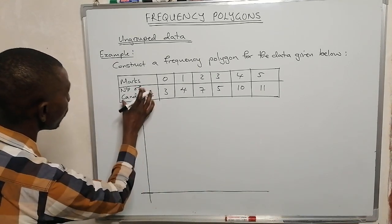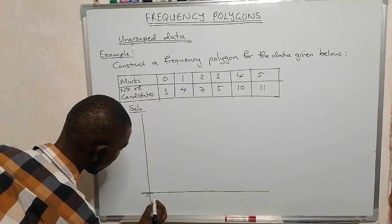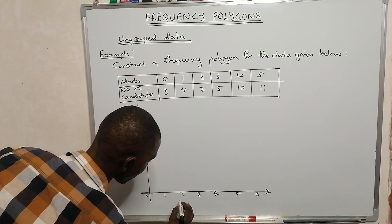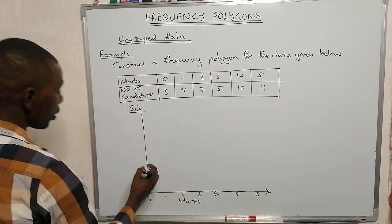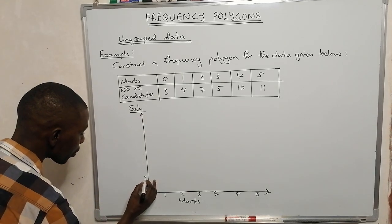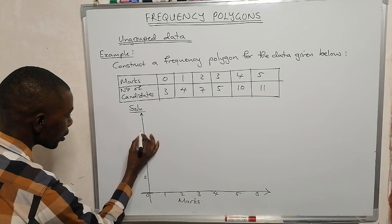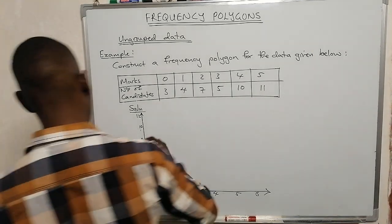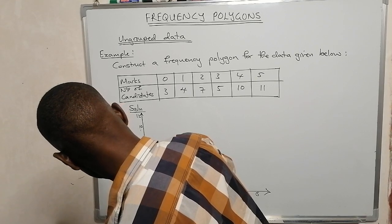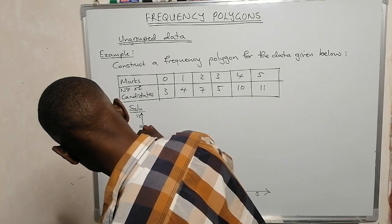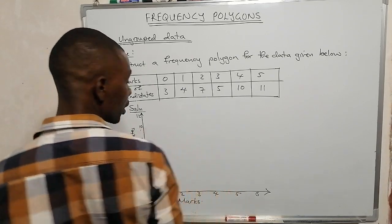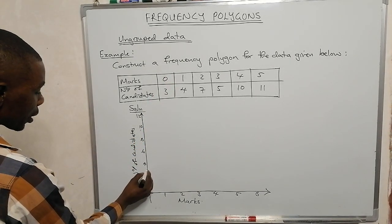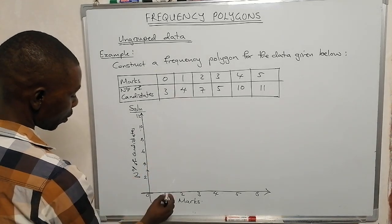On the x-axis we have marks: 0, 1, 2, 3, 4, 5. On the y-axis (frequency / number of candidates) we use 2, 4, 6, 8, 10, 12, since the maximum value is 11. Now we plot the points: (0, 3) — place a star there; (1, 4) — place a star again.